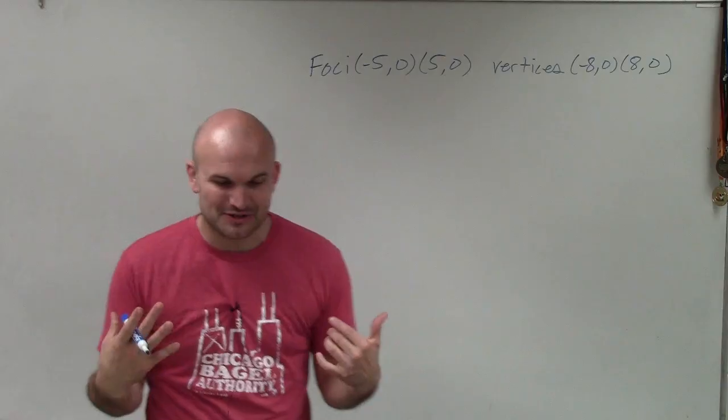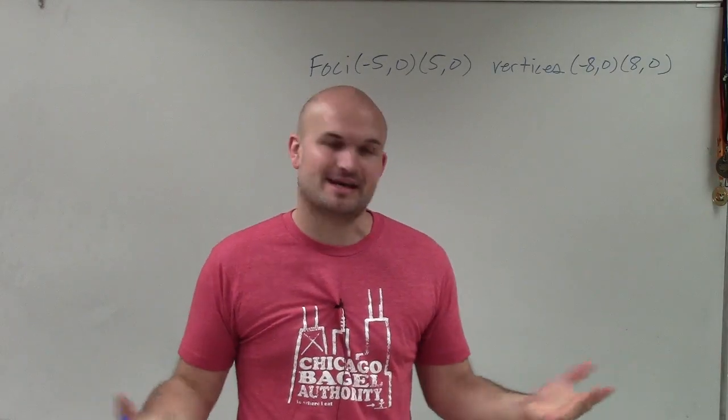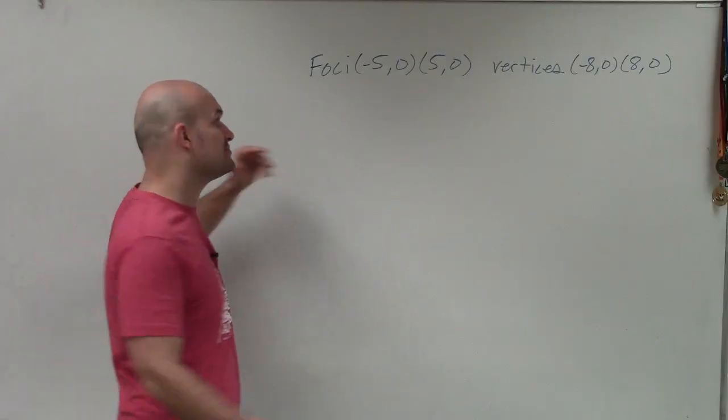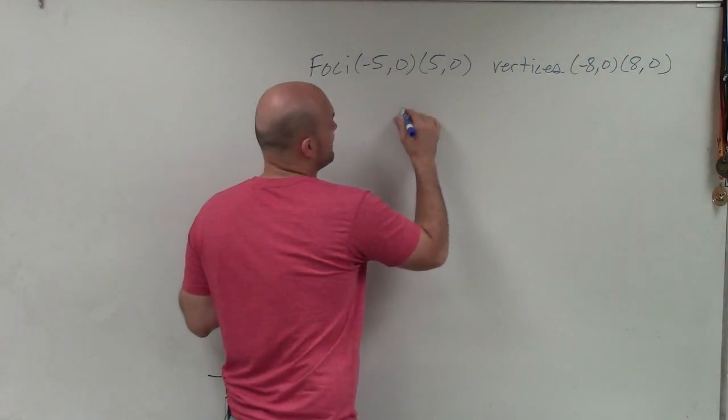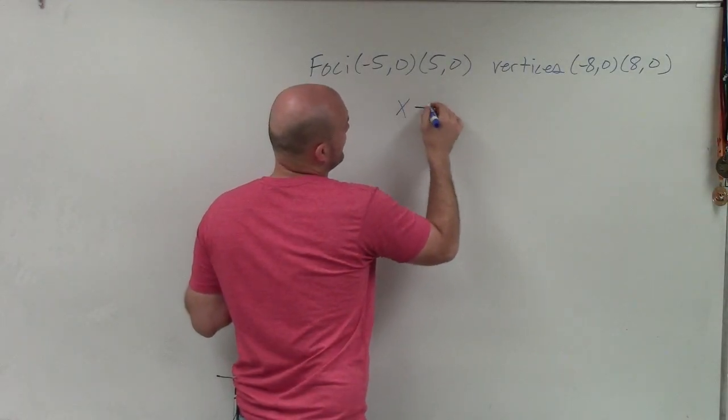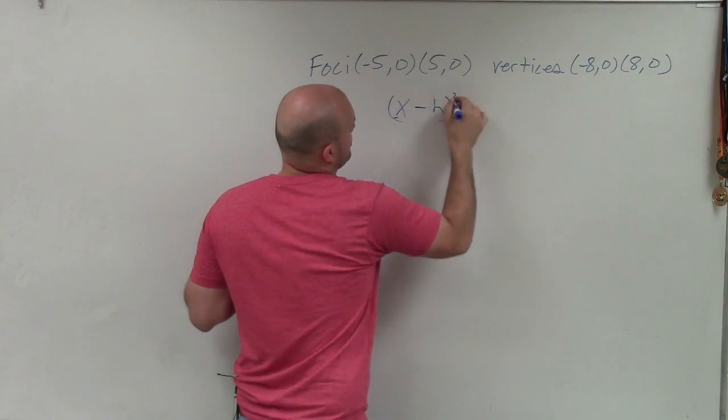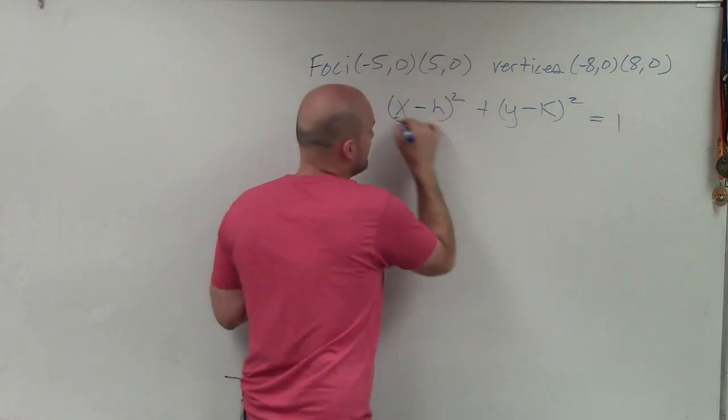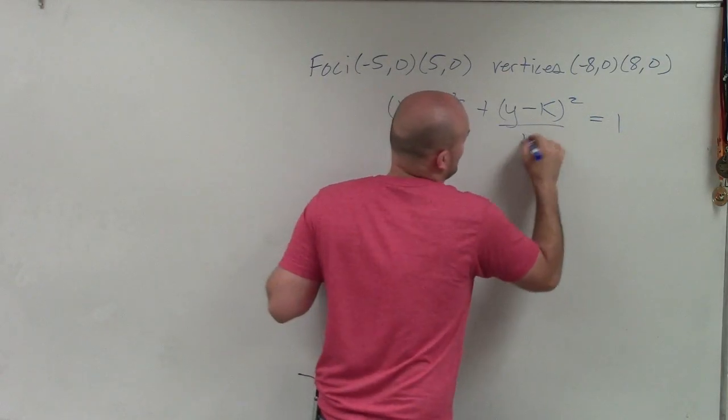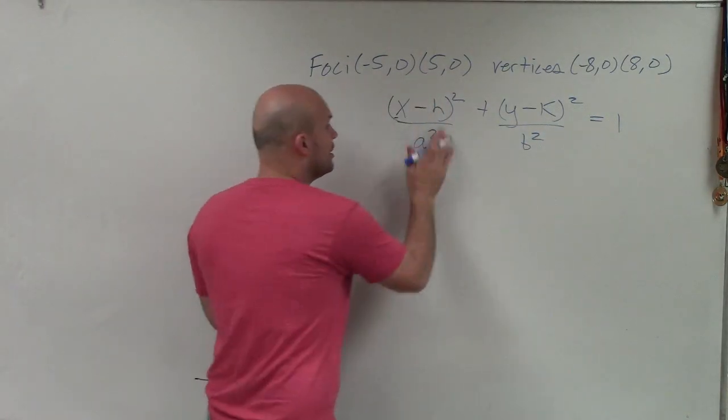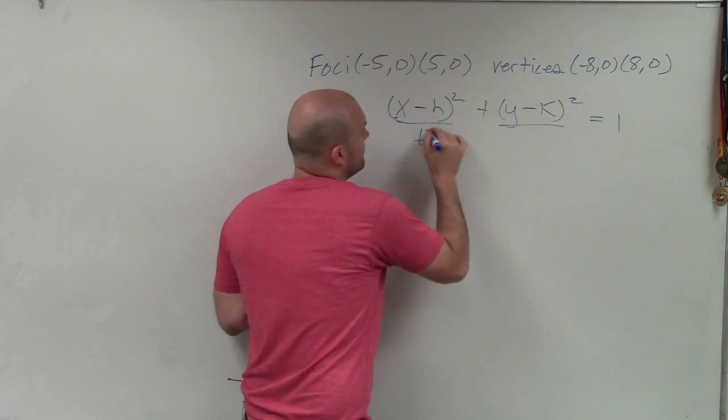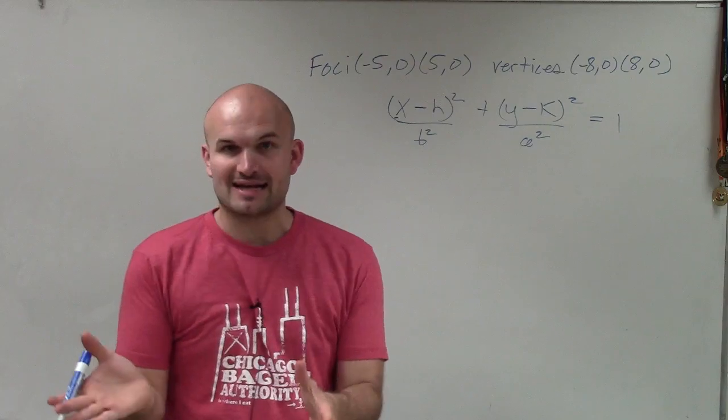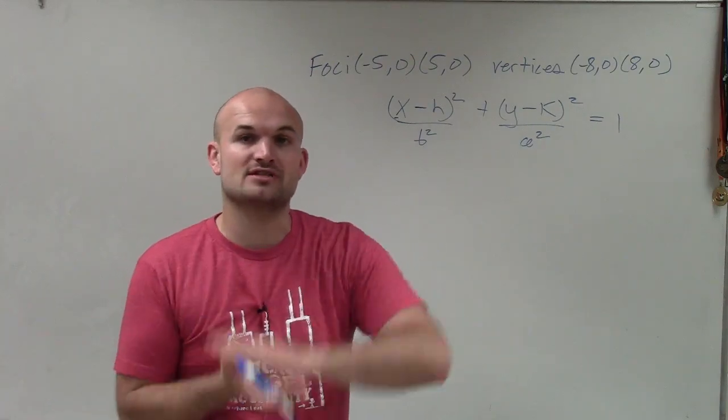Welcome. All right, so what I want to do is show you how to write the equation of the ellipse. Now, what we're provided is the foci and the vertices. And there's two different types of equations we could have. We can have (x-h)²/a² + (y-k)²/b² = 1. Remember, we could have a² and b² or we could have b² and a². And it all depends on where's the major axis. Is the major axis horizontal or is the major axis vertical?